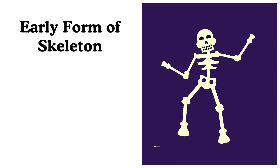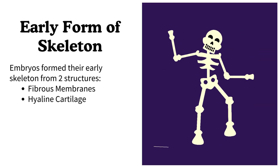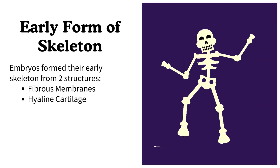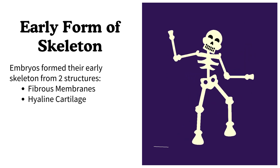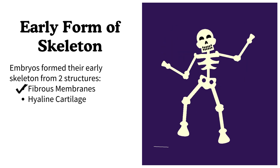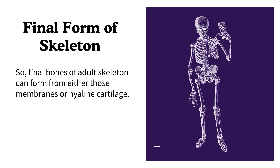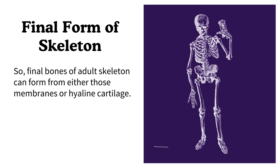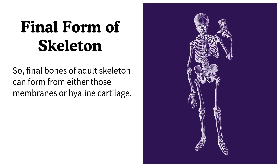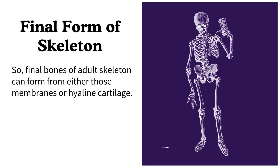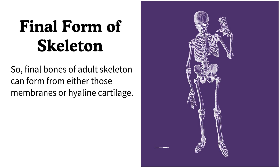What is the early form of skeleton? During development, embryos form their early skeleton from two structures: fibrous membranes and hyaline cartilage. The final bones of the adult skeleton can form from either those membranes or hyaline cartilage.